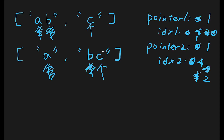We've now reached the end of words in both input arrays — 'c' and 'bc' — so we update pointer one to two and pointer two to two, and reset index one and index two both to zero. There are no more words, so we finish the iteration. At the end, if both pointers equal the length of their respective input arrays — which is two — we return true. Pointer one is two and pointer two is two, so the output is true.